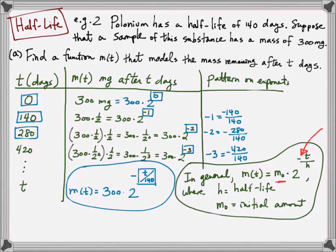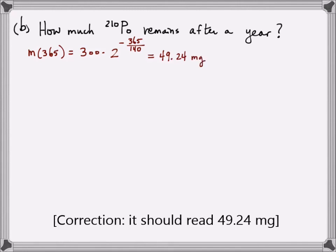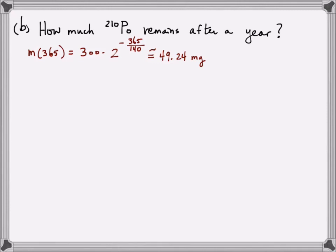The difference between the half-life model and doubling time model is exactly the negative sign in the exponent. Everything else is the same: initial quantity, the parameter in the exponent, and T on top. A negative sign in the exponent means it's a half-life decay problem; no negative sign means it's a growth problem. Now, how much Polonium-210 remains after a year? With T equal to 365 days: m(365) equals 300 times 2 raised to negative 365 divided by 140. Using a calculator, this gives approximately 49.25 mg remaining after a year.